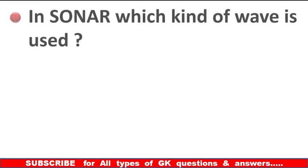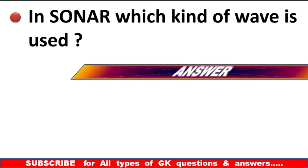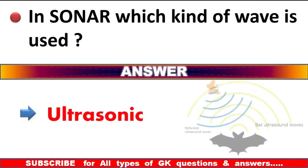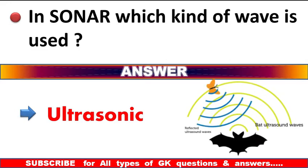In sonar, which kind of wave is used? Answer: Ultrasonic wave. Bats use ultrasonic sound to travel from one place to another. It is also used in ships to determine the distance and time from the ship to other places.